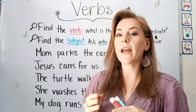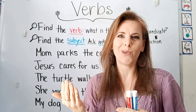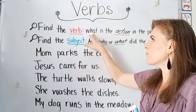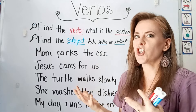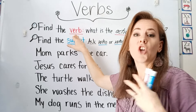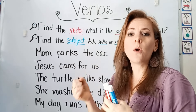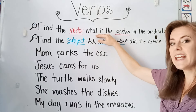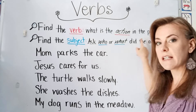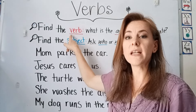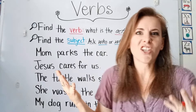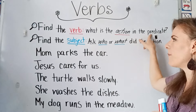So first, you really want to find the verb first in your sentence because it'll help you more easily find the subject. To find the verb, you're going to ask: what is the action in the predicate? A verb can show an action, something that's being done, or it can be a state of being. Here we're going to talk about the action being done in the predicate, because our verb is always in the predicate part of the sentence.